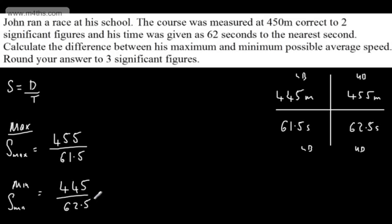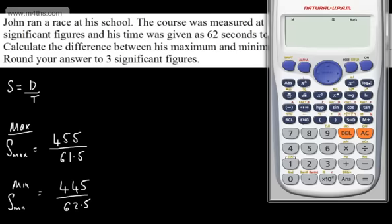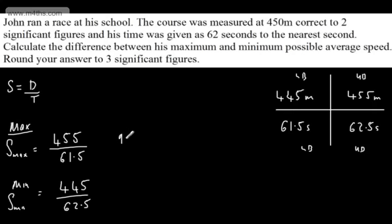Let's look at these in a calculator. The first one, and my answer will be meters per second, is 455 over 61.5, which gives 910 over 123. That's approximately 7.39 and so on. So this is 910 over 123 meters per second.